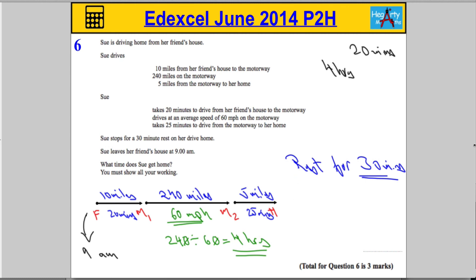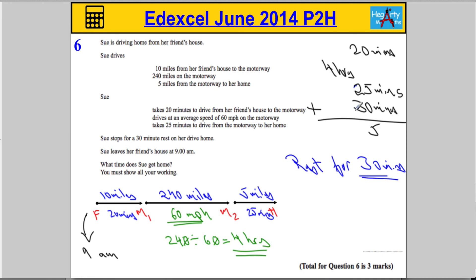This part of the journey takes 25 minutes, and don't forget the rest of 30 minutes. So let's get the total time: 20 minutes plus 25 minutes plus 30 minutes gives us 75 minutes for the non-motorway parts. 60 minutes is one hour, so 75 minutes is 1 hour and 15 minutes. Adding that to the 4 hours for the motorway gives us a total journey time of 5 hours and 15 minutes.